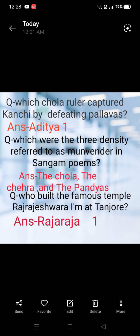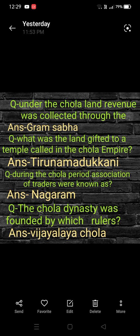Which were the three dynasties referred to as Munivindar in Sangam poems? The answer is the Cholas, the Cheras, and the Pandyas. Who built the famous temple Rajarajeswara at Tanjore? The answer is Rajaraja I. Under the Chola, land revenue was collected through the Gram Sabha.